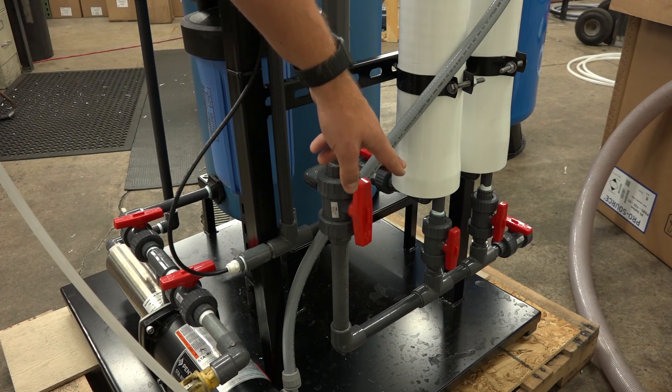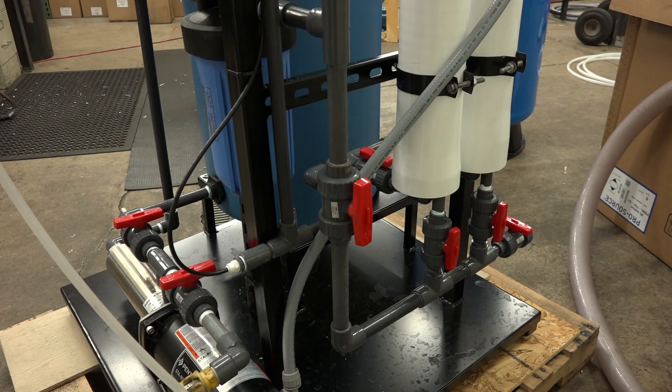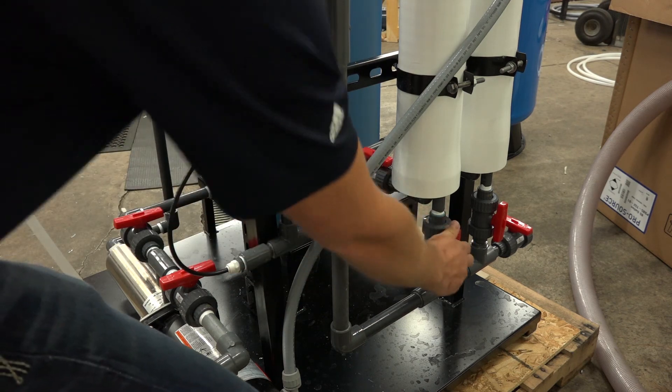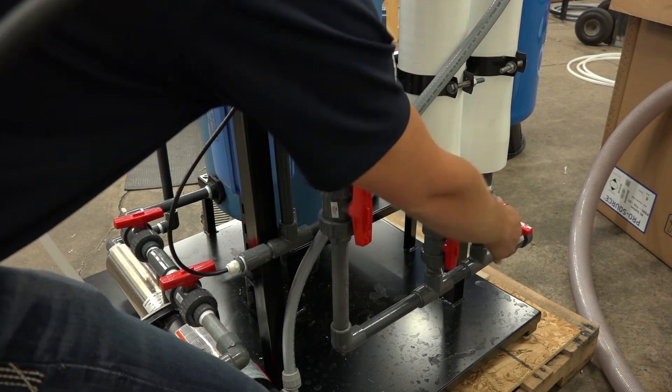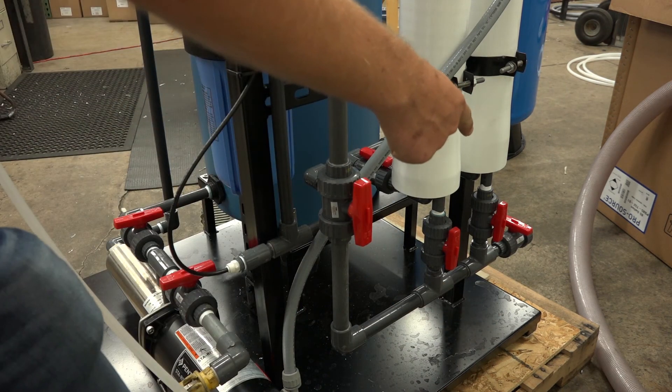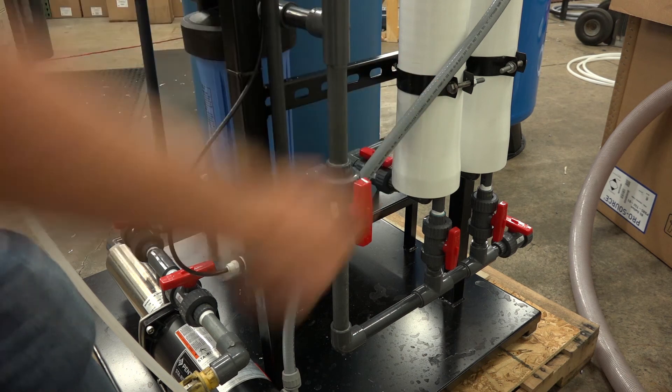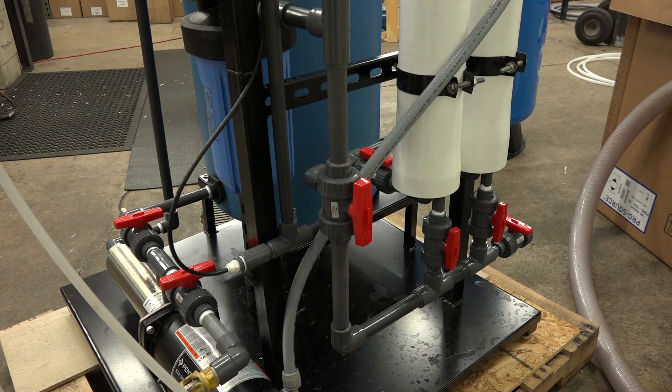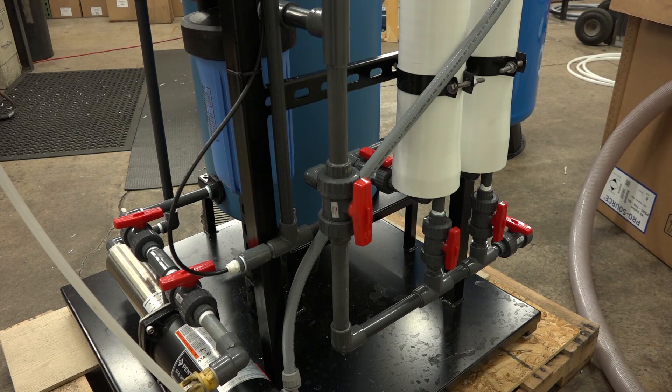The bottom you'll see there is your feed line. So if you are going to only do one membrane at a time, close one or the other. That's your feed to that particular membrane housing. You also have a direct drain over there for flushing. If you wanted to hook a hose up and not run it through the rest of the flow meters and through the housings, you can dump from that valve as well.